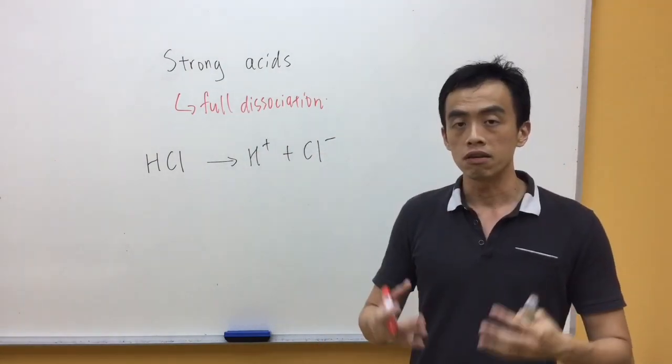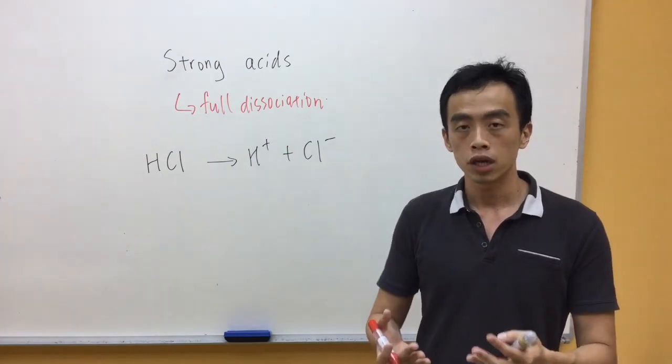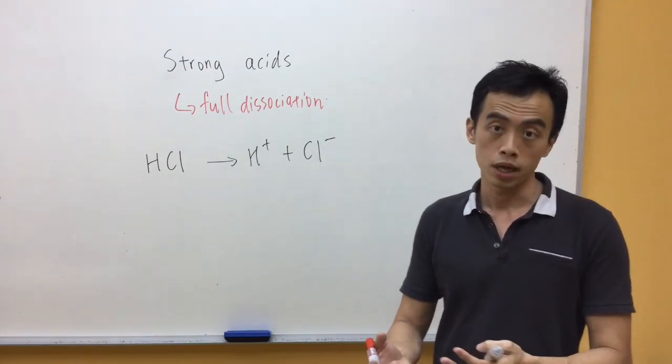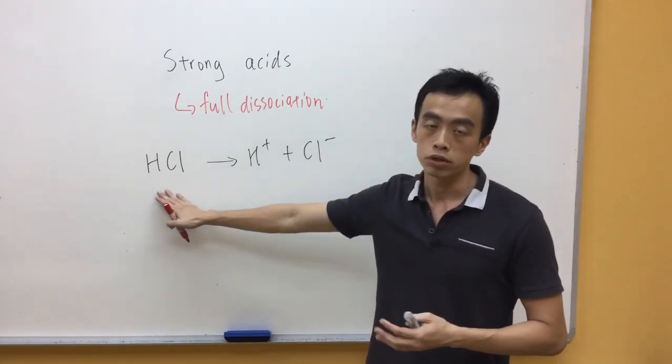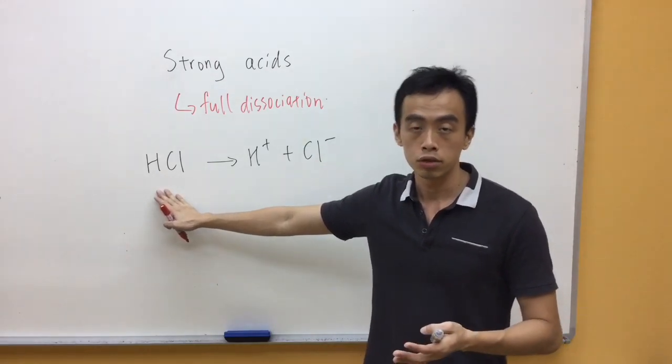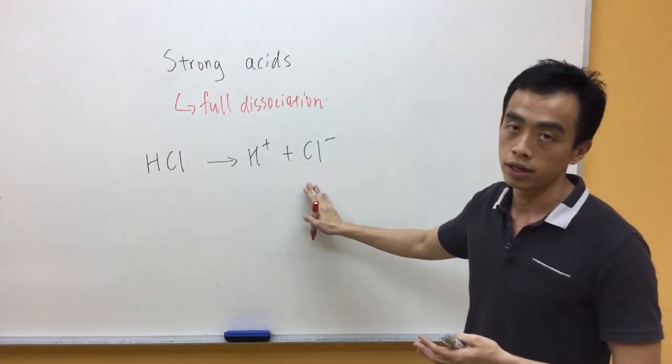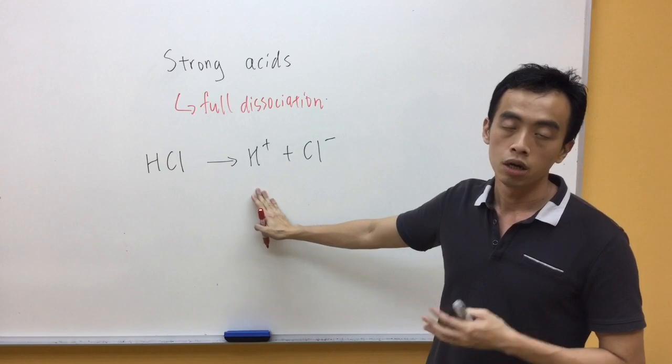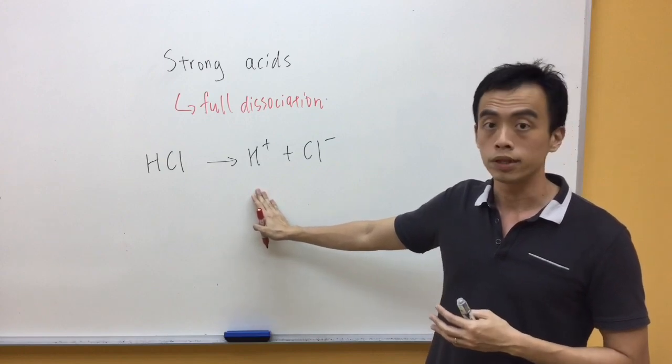Now what this means is, if I have a concentration of HCl which is 0.1 mol per dm cubed, because all of it is dissociated into solution to give me H plus and Cl minus, the concentration of H plus will also be 0.1 mol per dm cubed.